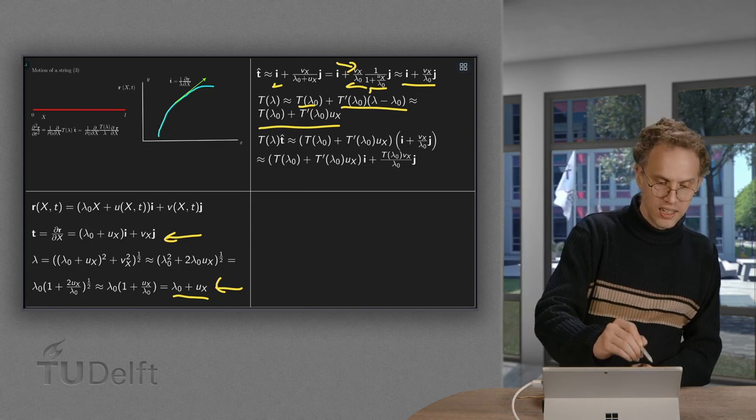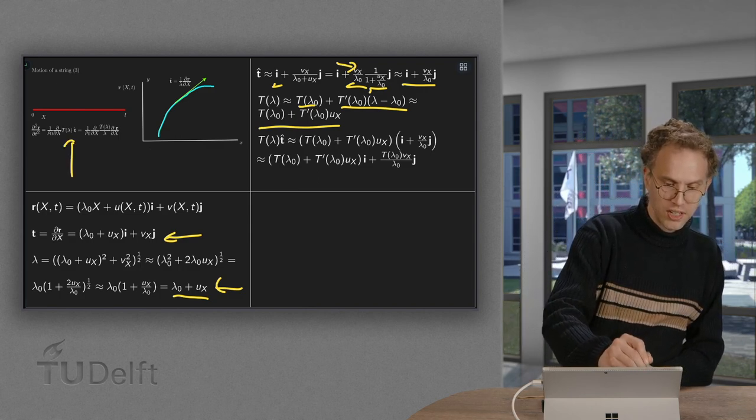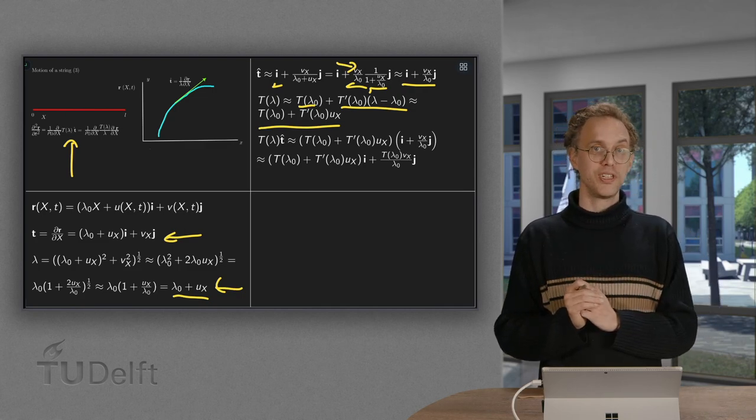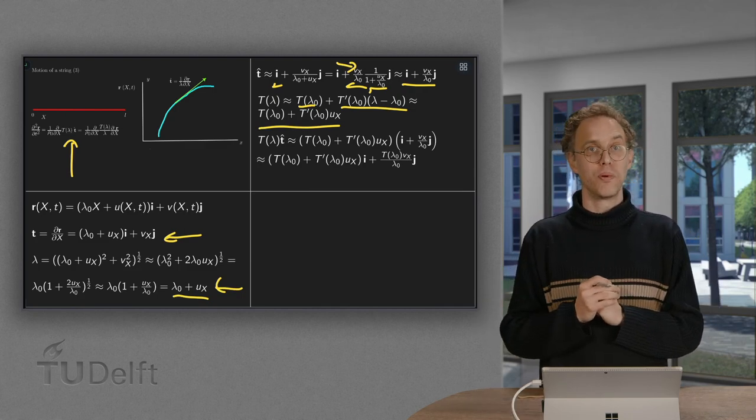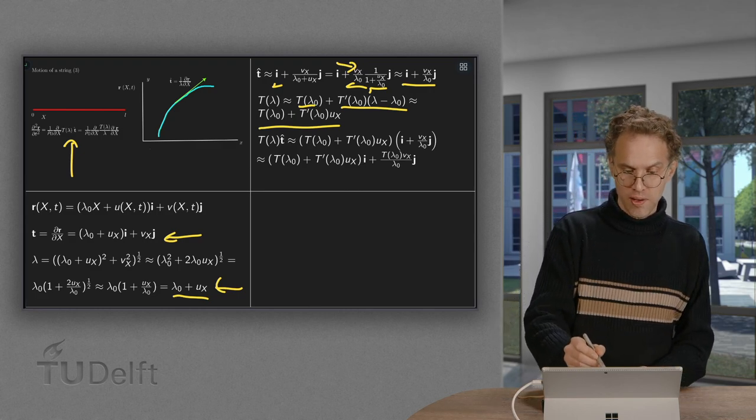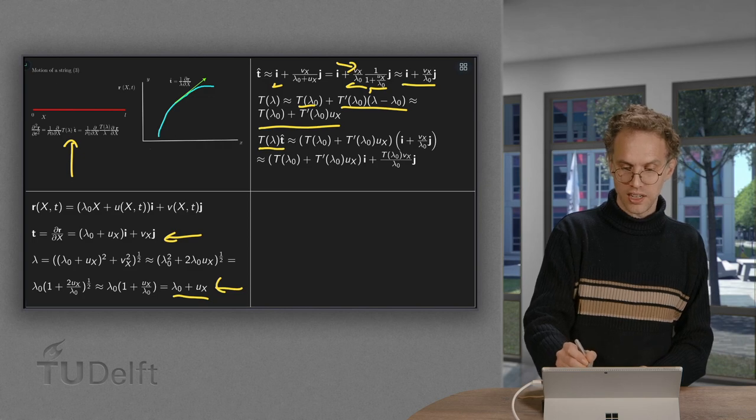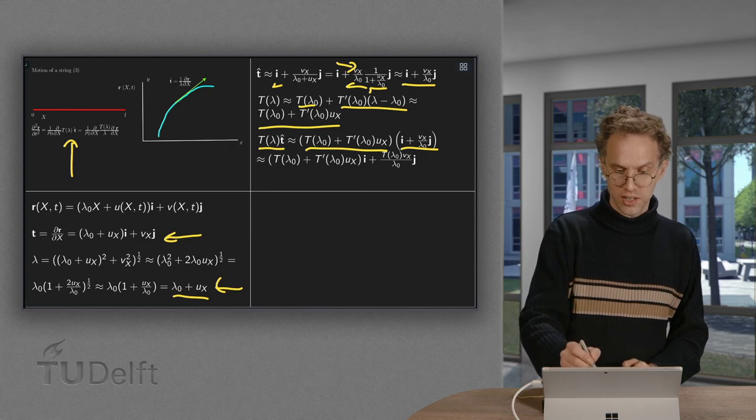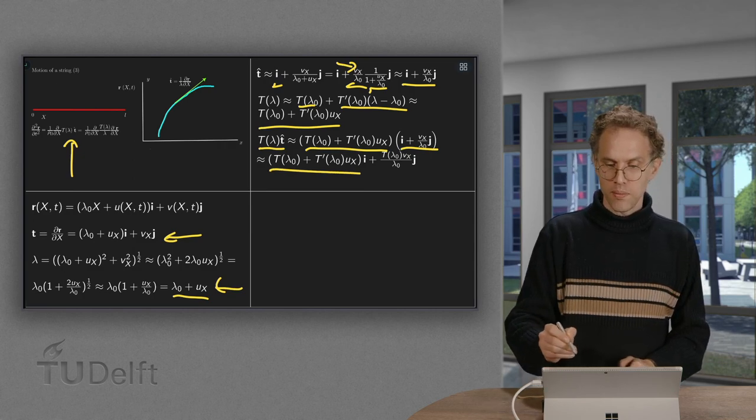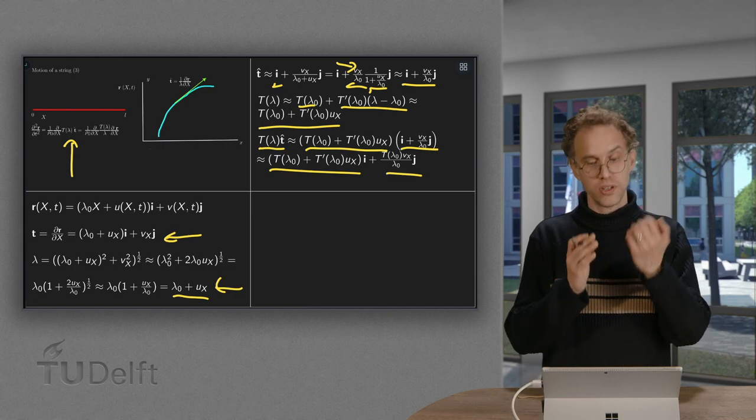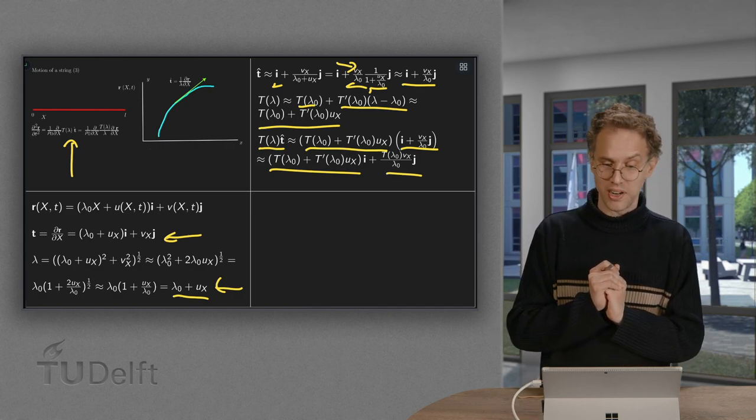Now what we need is an approximation for t of lambda times t hat. We have an approximation for t of lambda. We have an approximation for t hat. So we can approximate the product. t of lambda times t hat. Here we have our t of lambda. There we have our t hat. And then up to linear order you'll get i times the full term plus j times only the t of lambda 0. Because the other part is of quadratic order again.